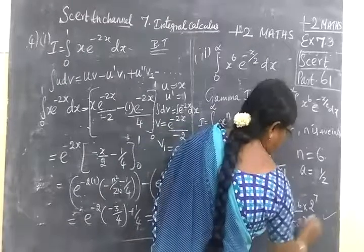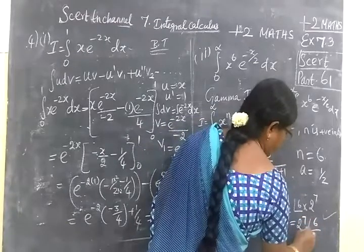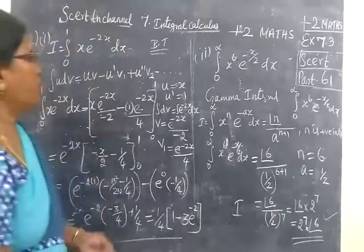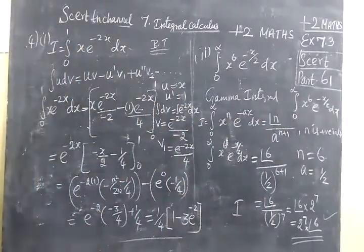Now we check the answer for that. Answer is 2 power 7 times factorial 6. So this answer is correct. This is also a very important question. Thank you.